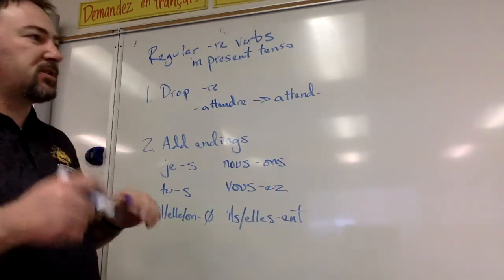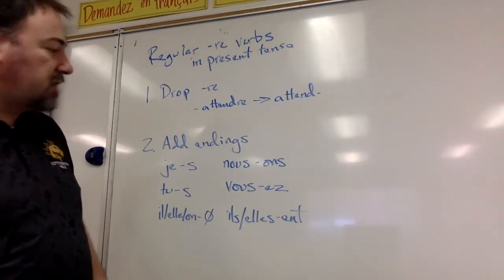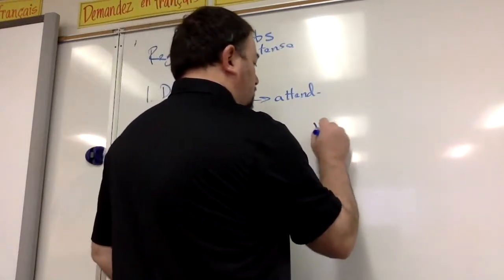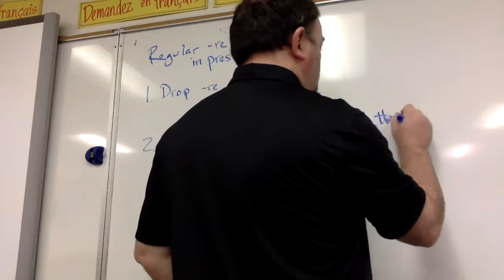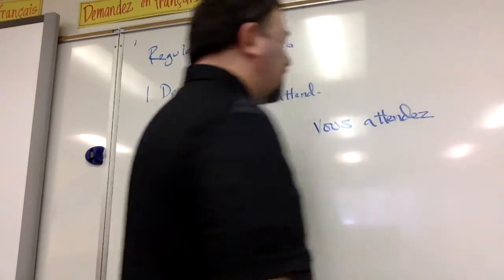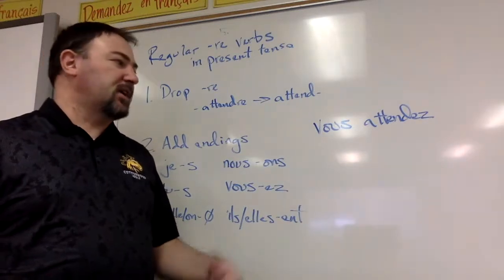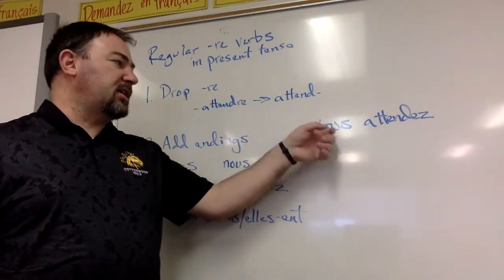Let's do a couple of examples. Using our verb ATTENDRE, if we're going to conjugate that for vous, it's vous attendez. Just like that, you conjugated ATTENDRE in present tense for vous.